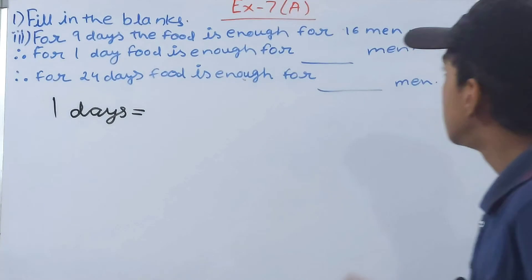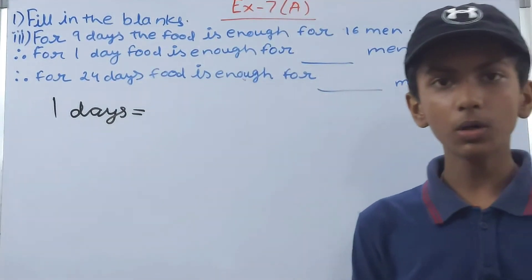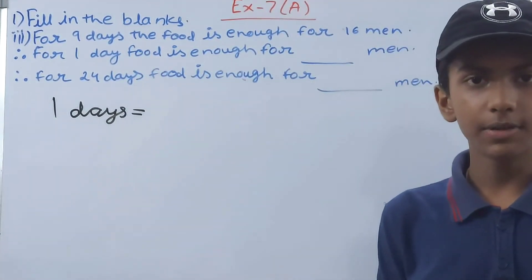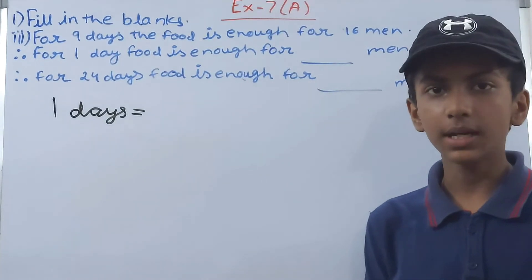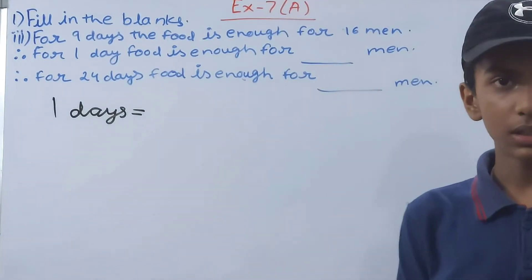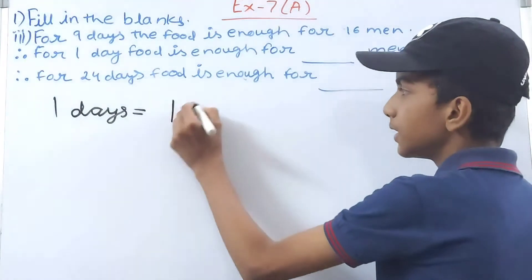We will decrease from one side so it will increase on the other side. So we'll have here 16 into 9. This will be how much? 144. So 144 men.